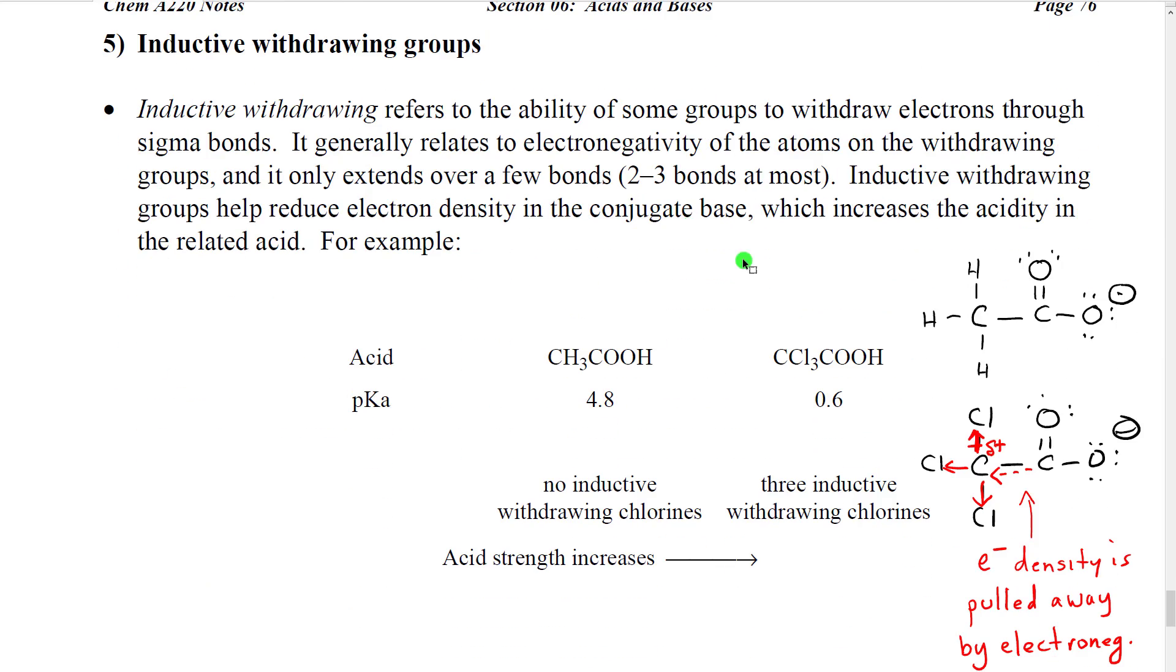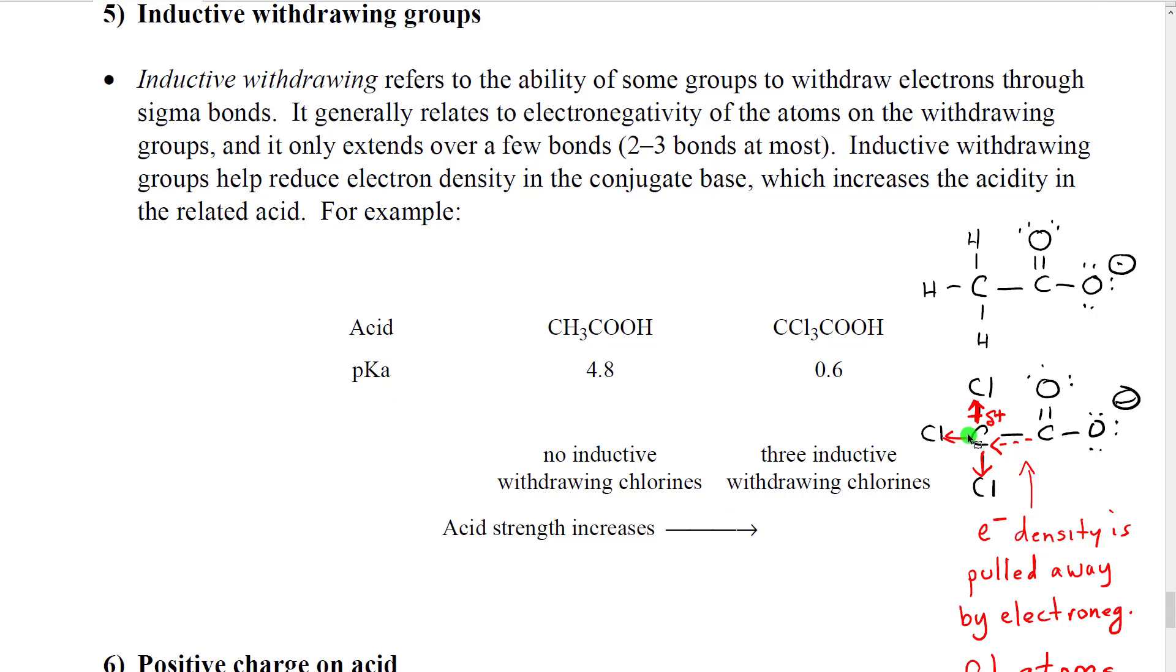The next factor is what we call inductive withdrawing groups, which also help spread electrons out in the molecule. They do that using bond polarity. When we talked about bond polarity, we talked about how, in a polar bond, the electrons are shifted toward the more electronegative atom. This is called inductive withdrawing, when we pull electrons through single bonds. What we can do is, we can take an acid, like acetic acid, where we have three hydrogens here on the carbon, and replace those hydrogens with chlorines.